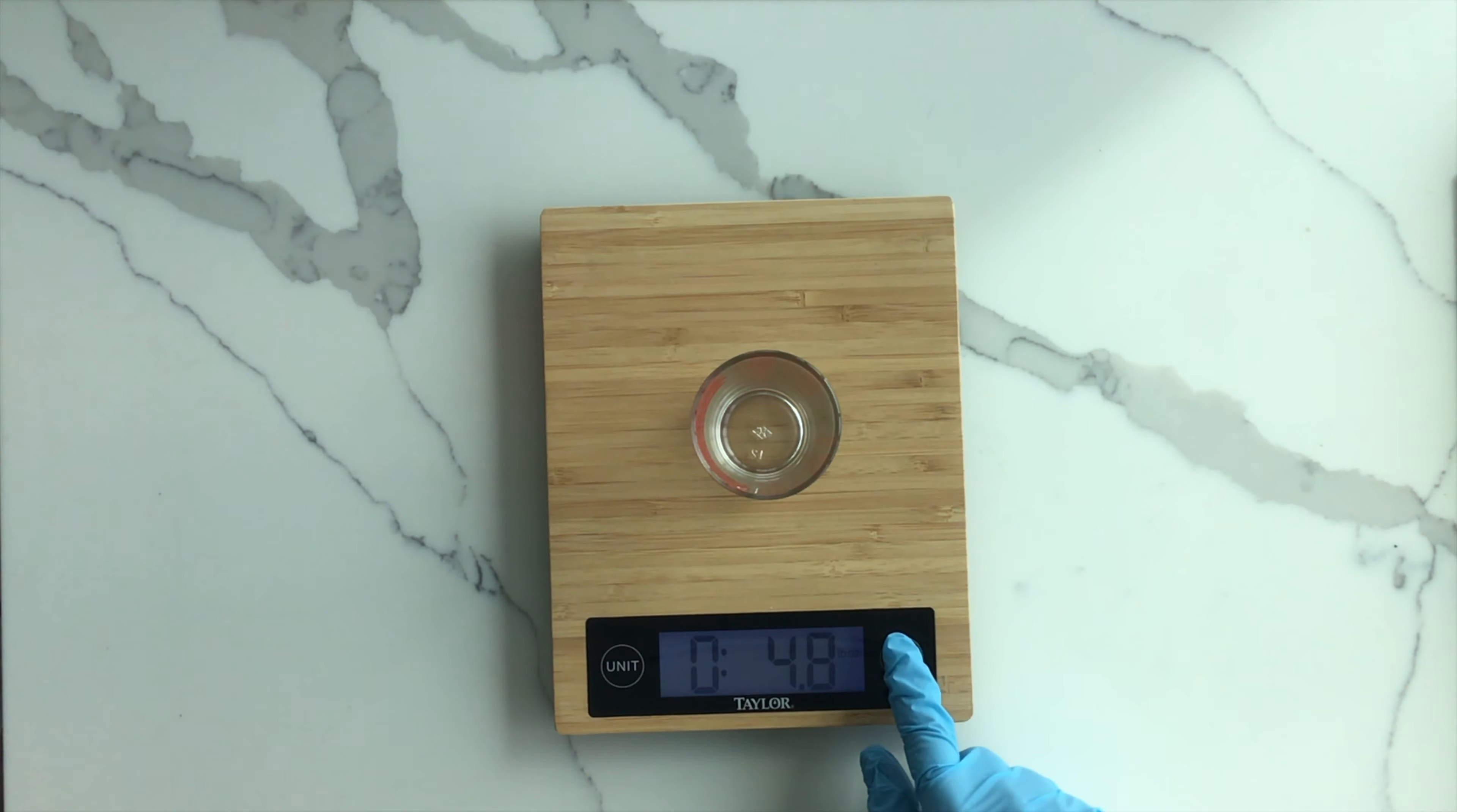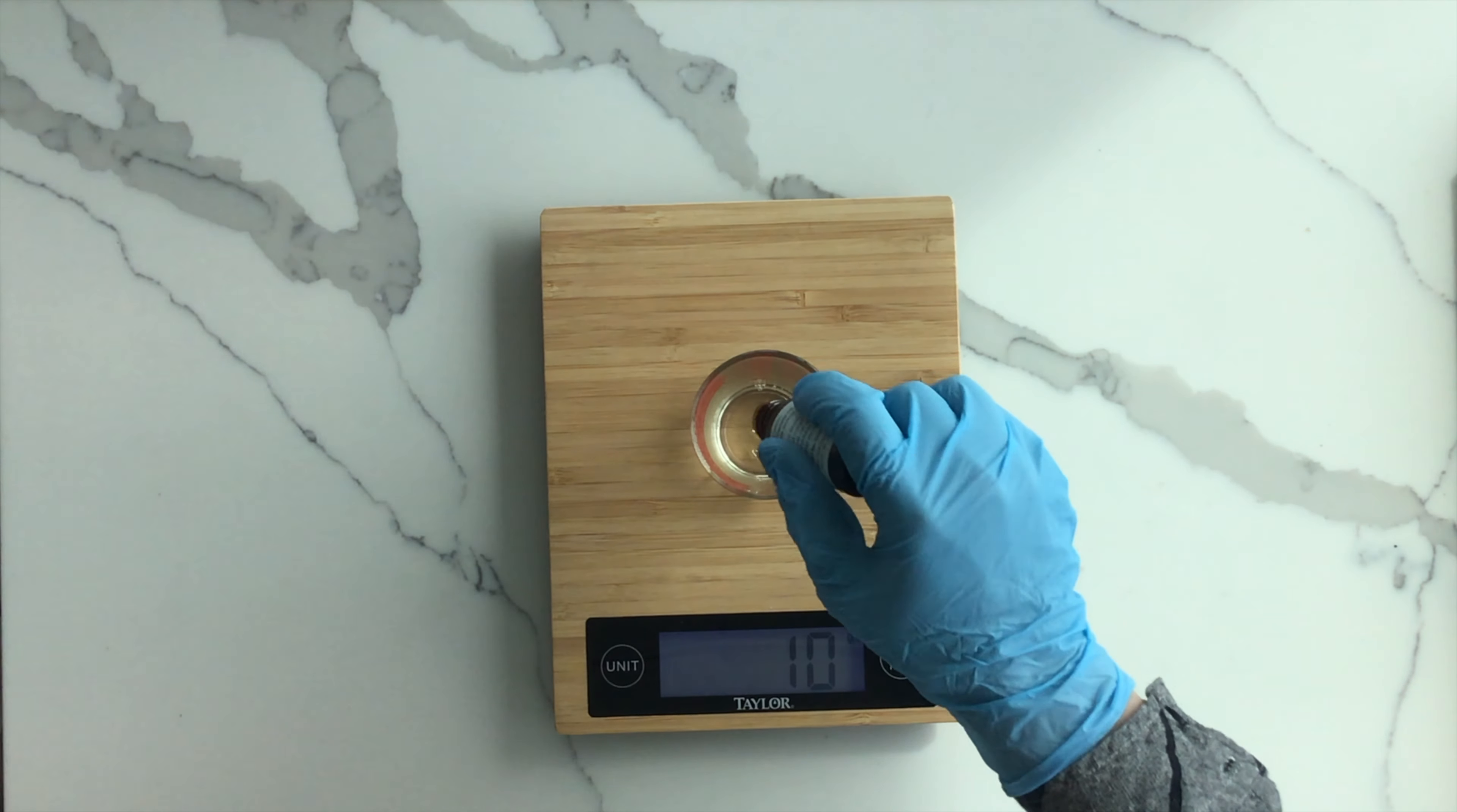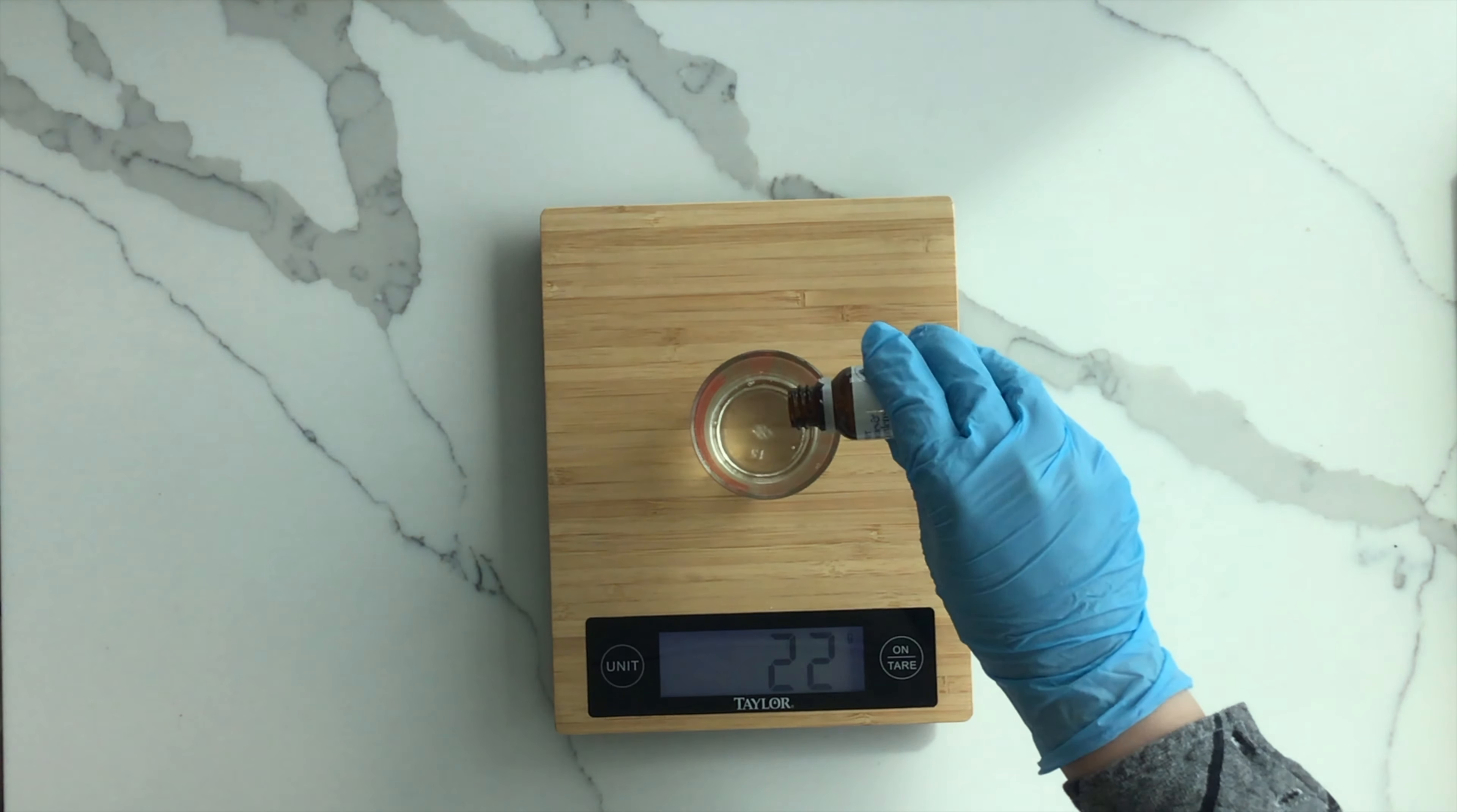Here, I am adding peppermint essential oil and I've changed the unit to grams on my scale for a more precise measurement. If we didn't want to include any extra additives, the soap would still turn out just fine. It would just be unscented and a neutral color.